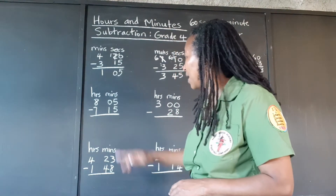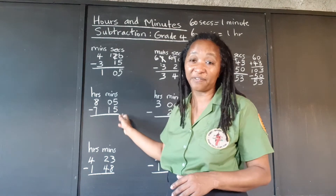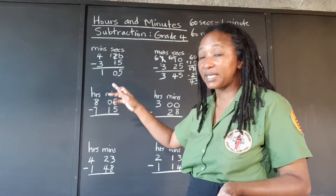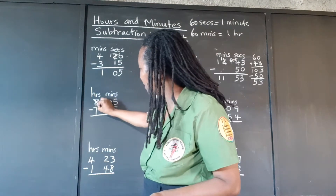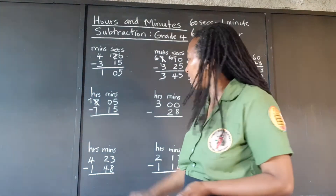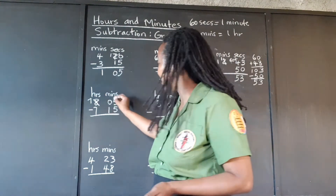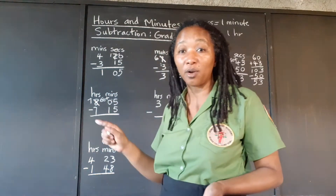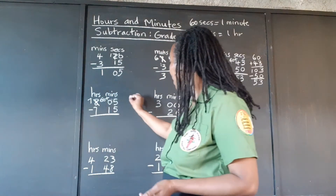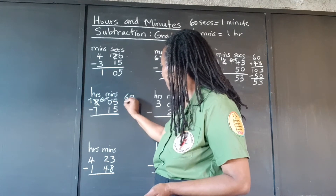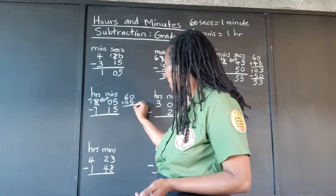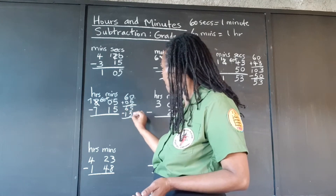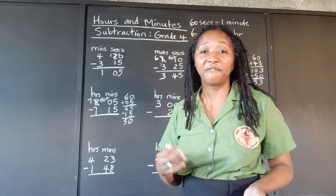Here we have 5 minutes at the top and they want us to take 15 minutes. We can't do that, so we're going to go over to the hours and take 1 hour from the 8, leaving 7. We bring the 1 hour as 60 minutes, go to the side, add the 60 and the 5 — that gives us 65 — and we take out the 15. So we're left with 50 minutes.